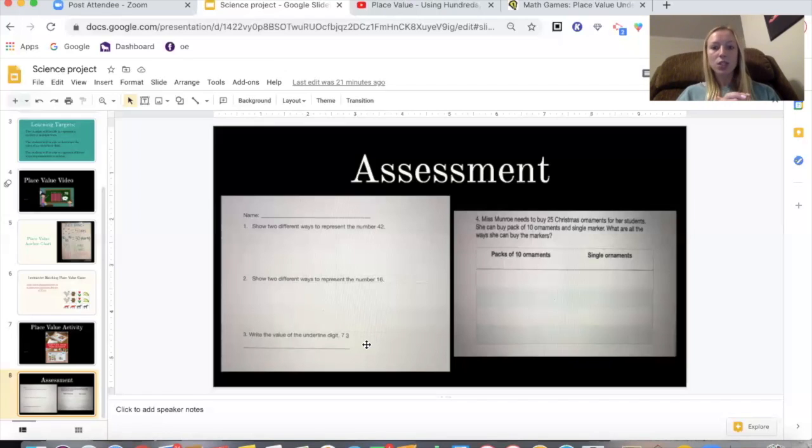And then our last question is question number four. And it says, Miss Monroe needs to buy 25 Christmas ornaments for her students. She can buy packs of 10 ornaments and single ornaments. What are the ways she can buy the ornaments? I know that says markers. I need to go and change that. I'm sorry, but it will say ornaments when you get the official assessment. So then there's a chart and it says packs of 10 ornaments and single ornaments. So what we need to do on this one is understand that packs of 10 ornaments is equal to one 10 in our numbers.